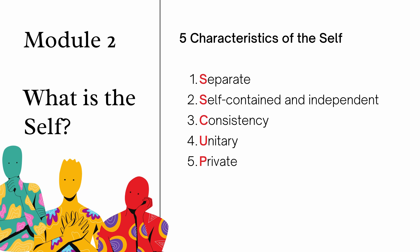Next, the self is self-contained and independent. The self is self-contained because it is complete by itself and does not need the help of another self for it to exist. The self is complete with its own thoughts, its own unique characteristics, and at the same time it has its free will.